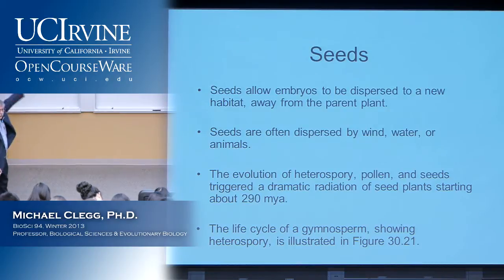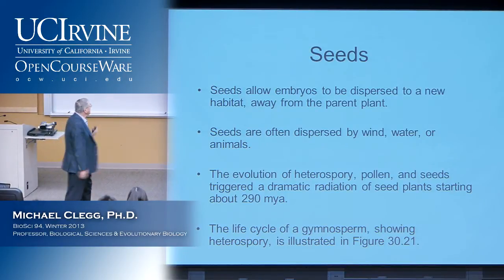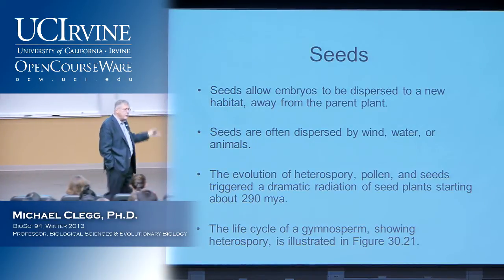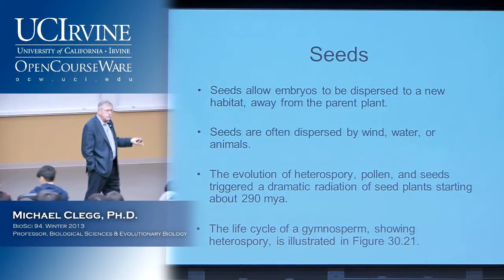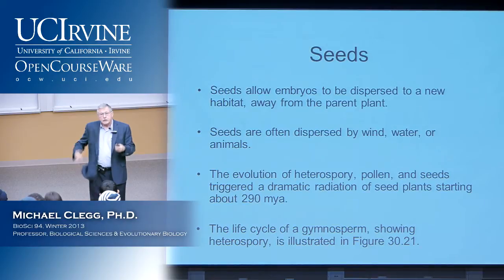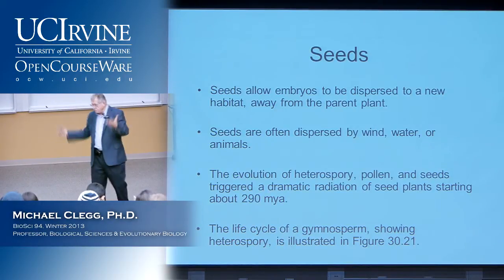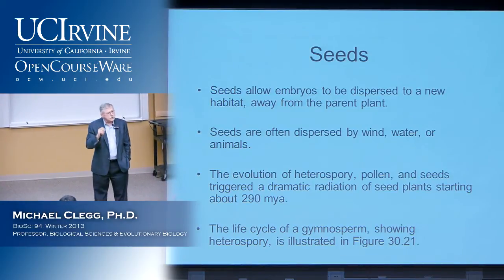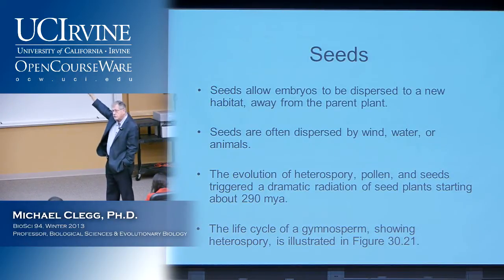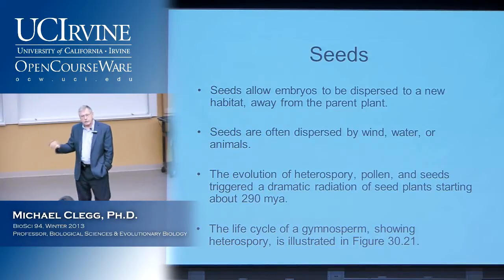The evolution of heterospory, pollen, and seeds triggered a dramatic radiation of seed plants beginning about 300 million years ago. Before the appearance of the gymnosperms, most of the terrestrial environment was not occupied by plants, because ferns, horsetails, and giant tree ferns were dependent on very moist, swamp-like environments. So the evolution of heterospory, pollen, and seed provided the adaptations that allowed plants to spread.